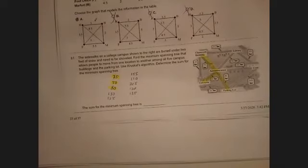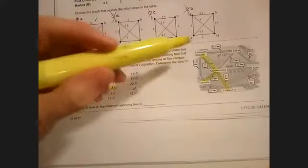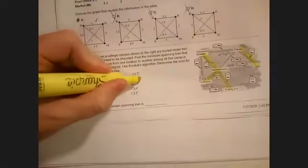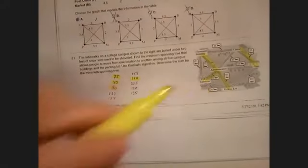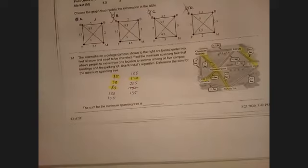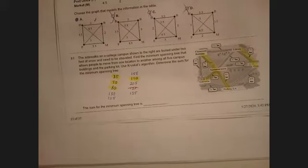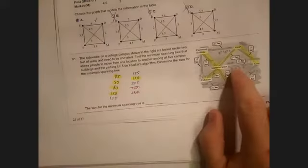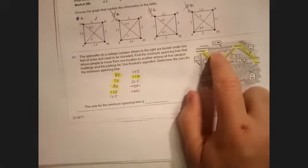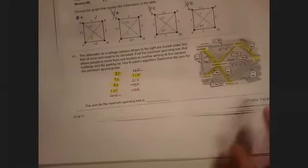Now we have to move up to 110. 110 is over here. It does not make a circuit because he's floating by himself. 120 is next. Oh, 120 makes a circuit, got to throw it away. Moving up: 130. 130 does not make a circuit, so it's cool. Now I'll keep going: 135. That makes a circuit, throw it away. 155, there's two of them. It doesn't matter which one I choose. That one does not work, and also that one does not work. So we throw. 205 will make a circuit.